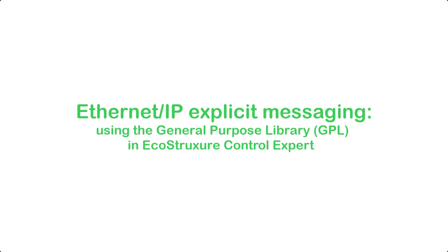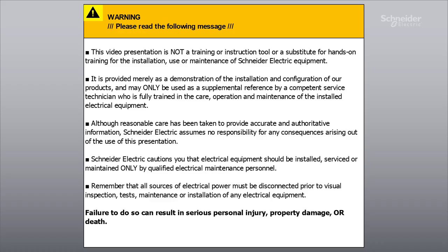Welcome to this demonstration of solutions in EcoStruxure Control Expert to implement Ethernet IP explicit messaging with the function blocks offered in the general purpose library. Please bear in mind that this is a basic demonstration not intended to replace any formal product training. The user might also need to adapt the configuration shown to the actual project requirements.